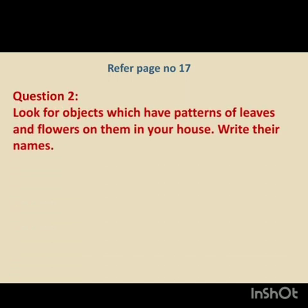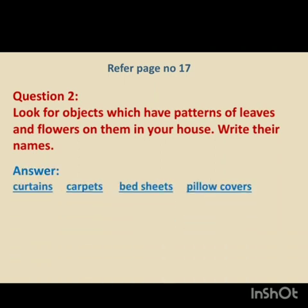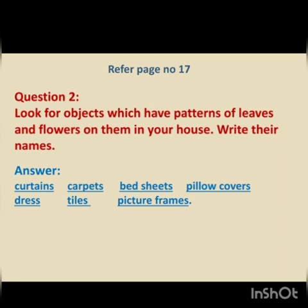Refer page number 17. The question is: Look for the objects which have patterns of leaves and flowers on them in your house and write their names. In my house, I can see so many objects that have the patterns of leaves and flowers. I have listed out their names: I can see the patterns in curtains, carpet, bedsheets, pillow covers, dress, tiles and the picture frames. Now, you will find the objects which have the patterns of leaves and flowers on them in your house and write their names in your EVS notebook.